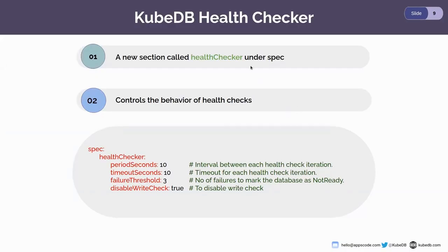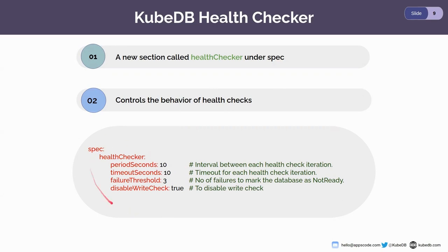Let's talk about the KubeDB health checker. In this release, we have added a new section called health checker under the spec section. It controls the behavior of the health checks. Previously, users couldn't control the behavior of the health checks, but now from this release, you can control the health checker using the field called health checker under the spec. You can see a sample of the health checker YAML here.